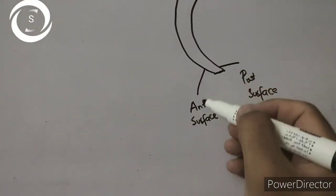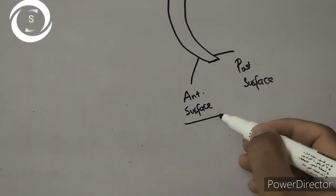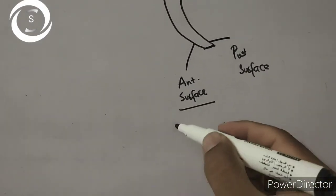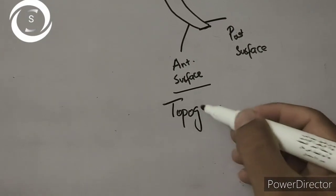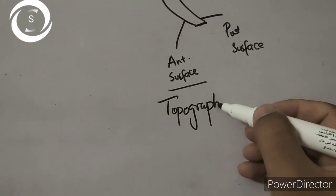Whereas corneal tomography examines the entire cornea, anterior as well as posterior surface. So that's the difference between tomography and topography.